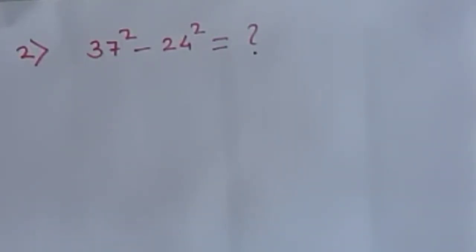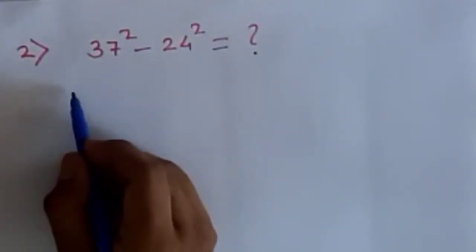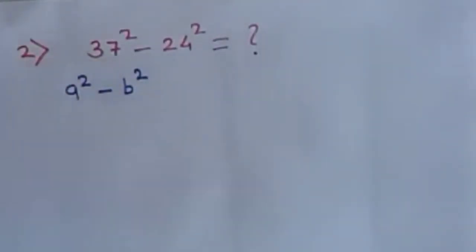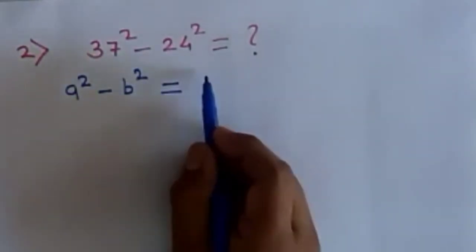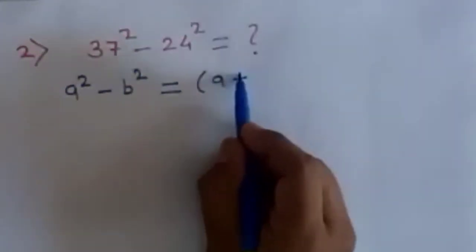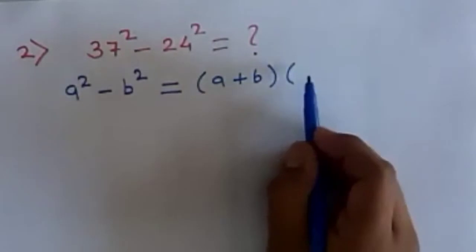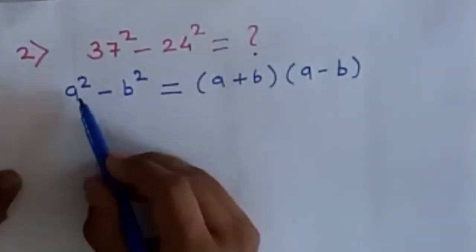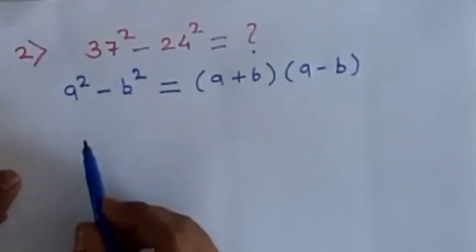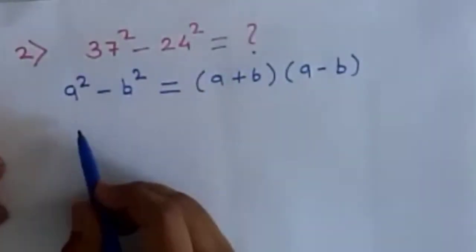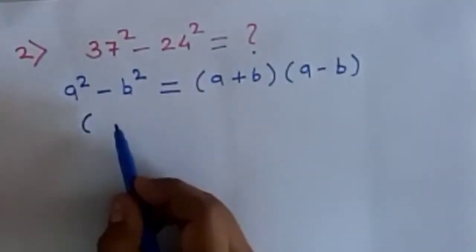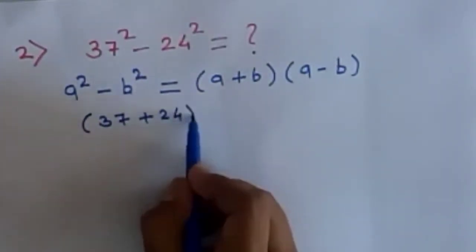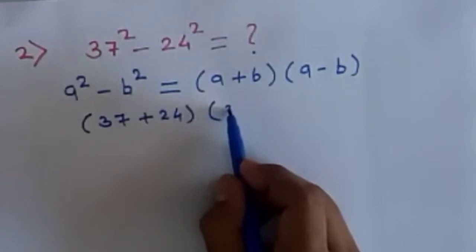Now consider 37 as a and 24 as b. Writing a² - b², here we have the formula: in bracket a + b, and in another bracket a - b. By comparing, the value of a is 37 and the value of b is 24. So 37 + 24, and in another bracket, 37 - 24.